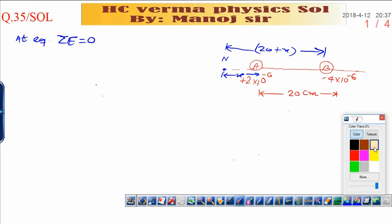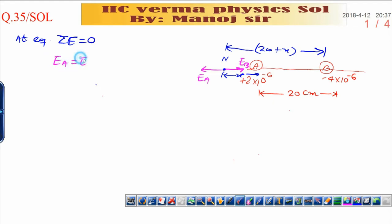At this point, electric field due to positive charge that is outward, this is EA, and electric field at point N due to B that will be inward because it is negative charge. This is called EB. At equilibrium you can say due to 180 degree symmetry EA is equal to EB.